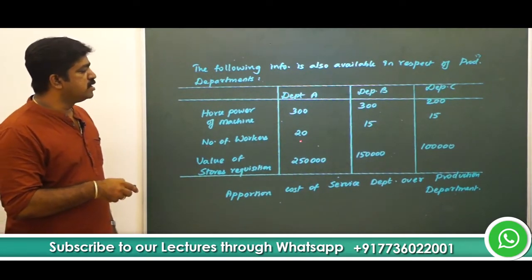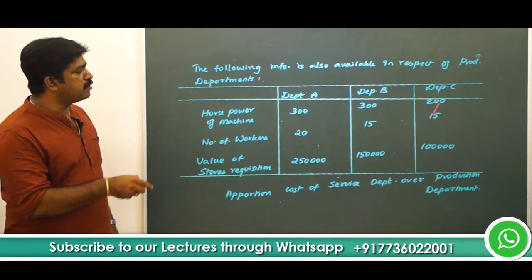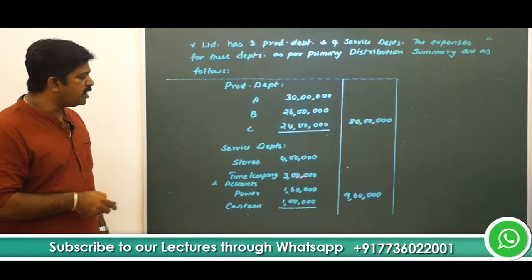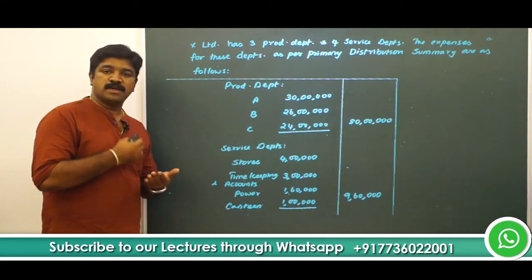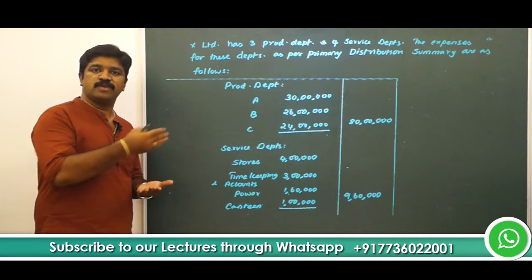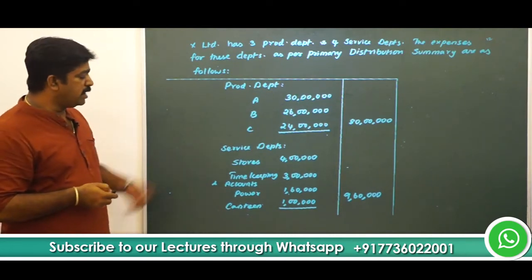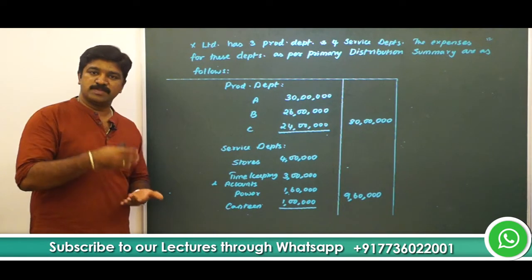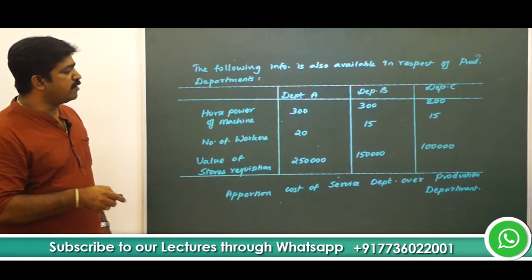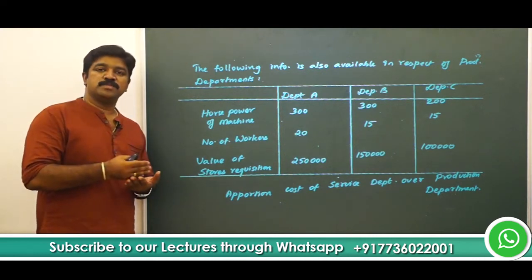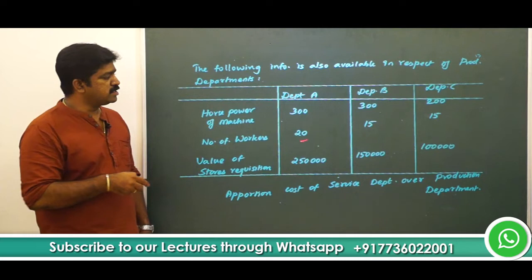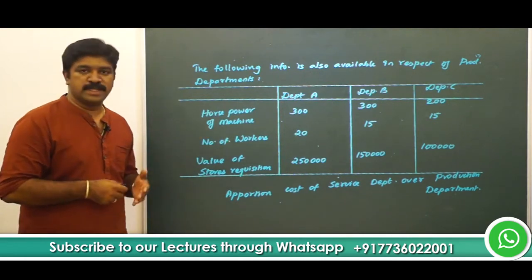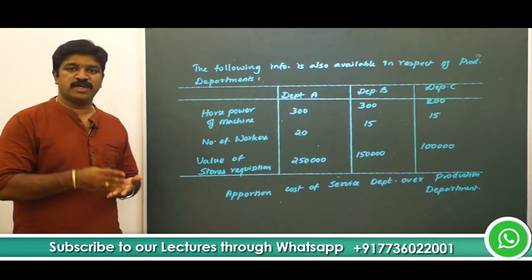Next, we have the number of workers — 20, 15, 15 for departments A, B, and C respectively. Where can we make use of this information? The timekeeping and accounts department has expenses of 3 lakh — this is mainly for the 3 production departments and can be linked with the number of workers. Canteen expense is 1 lakh, which is basically for the people in the respective departments: 20, 15, 15. So these two items can be apportioned in the ratio 4:3:3 — that is, 20:15:15 reduced to 4:3:3.